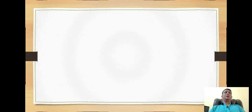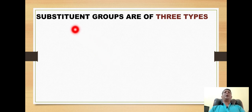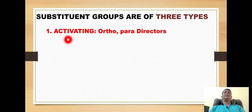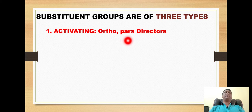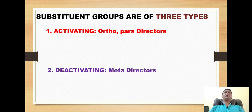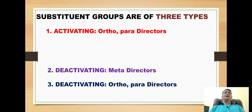For this purpose, substituent groups are classified into three types. Number one is the groups which are activating and directing orientation at ortho and para positions — called activating ortho-para directors. The second group is the deactivating groups which are meta directors, and the last class is deactivating but having ortho-para orientation.